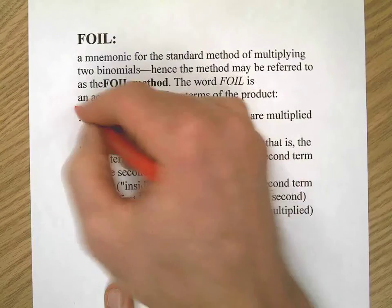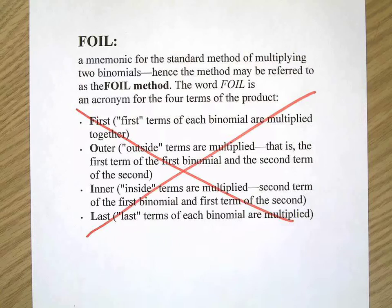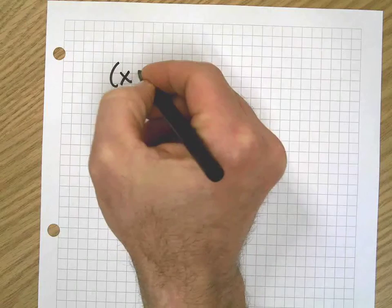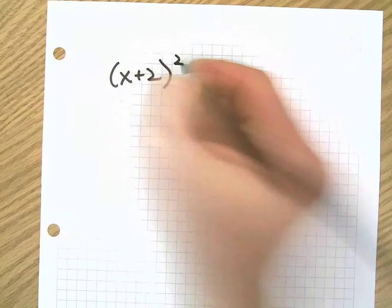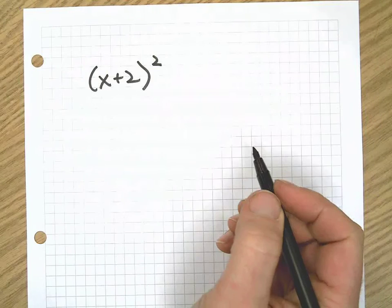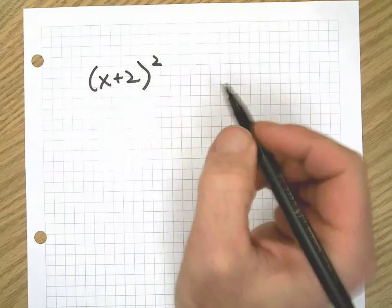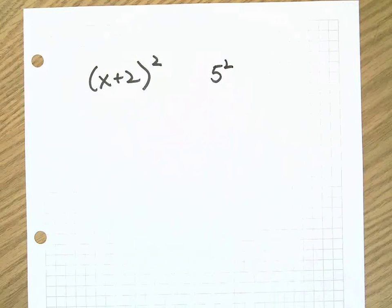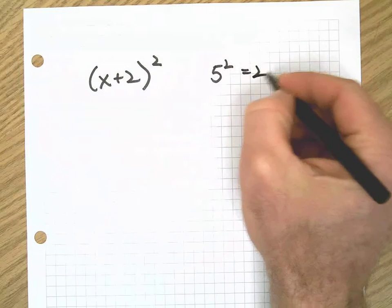Now, in order to square a binomial, let's see what's happening when we square something simple like a number. 5 squared is 25. What does that mean? It means there's a square, the sides are 5, and therefore 5 times 5 is 25. Think of that as the area of a square.